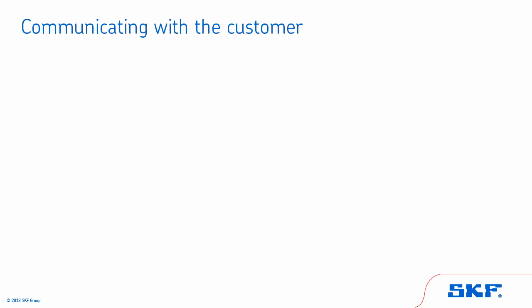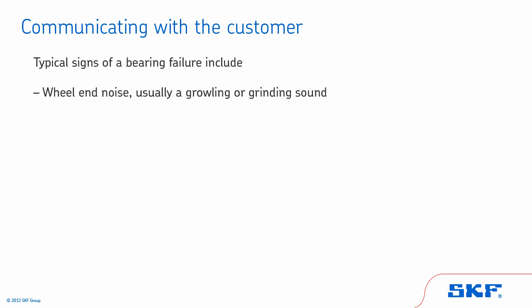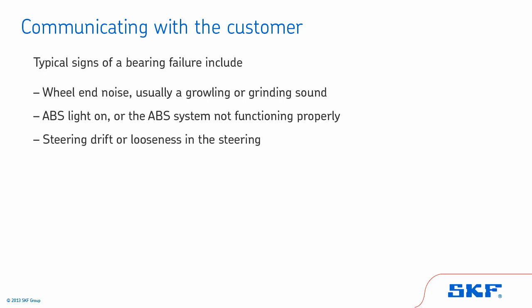Effectively communicating with the customer is an important element when diagnosing a vehicle and suggesting repairs. Regardless of the type of wheel bearing, when a wheel bearing wears out it may or may not give much warning. Typical signs of bearing failure include noise from the vicinity of the wheel — usually a growling or grinding sound — ABS lights on or the ABS system not functioning properly, steering drift or looseness in the steering, abnormal tire wear, and grease leakage.